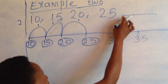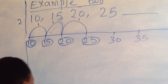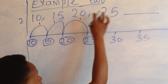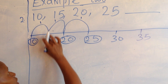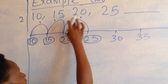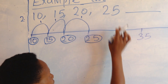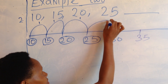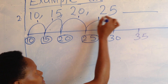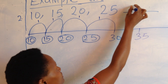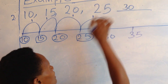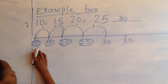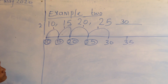For us to get the next number, we are also going to make one step. Since we have been making only one step, we are still going to make one step to get the next number. Our next number is 30, which is the answer. We are counting in fives.